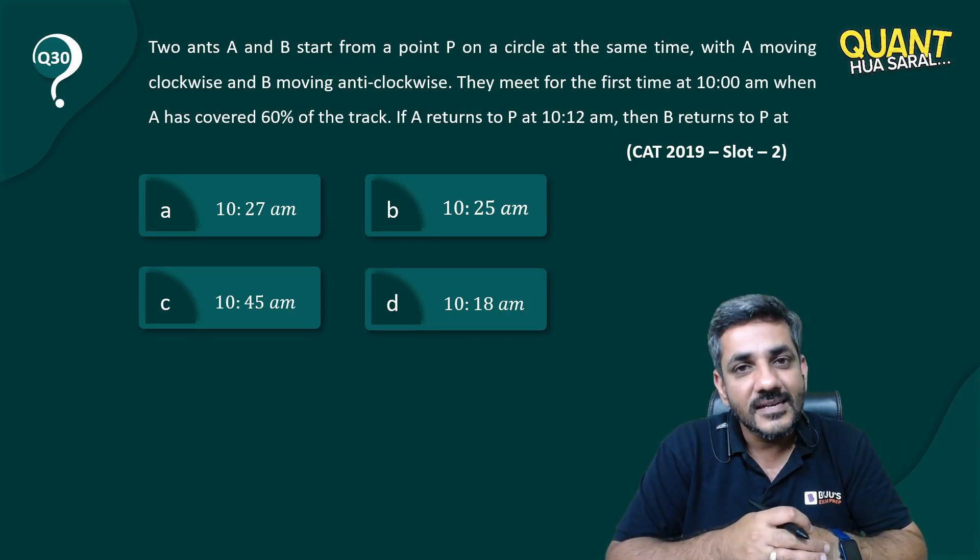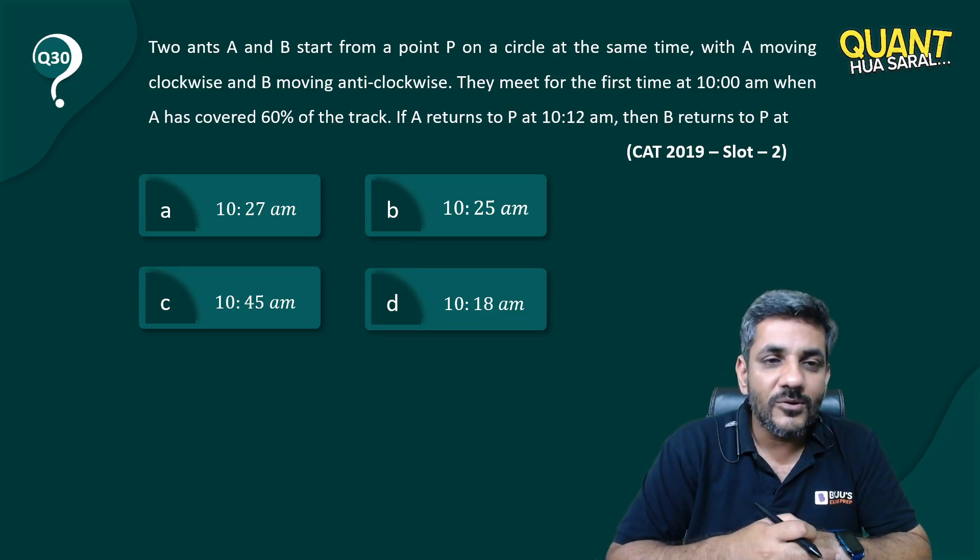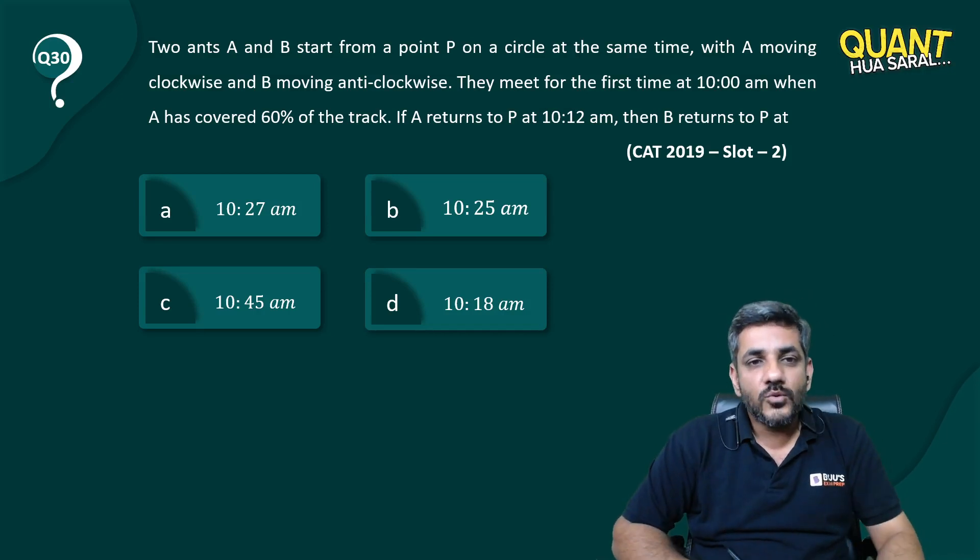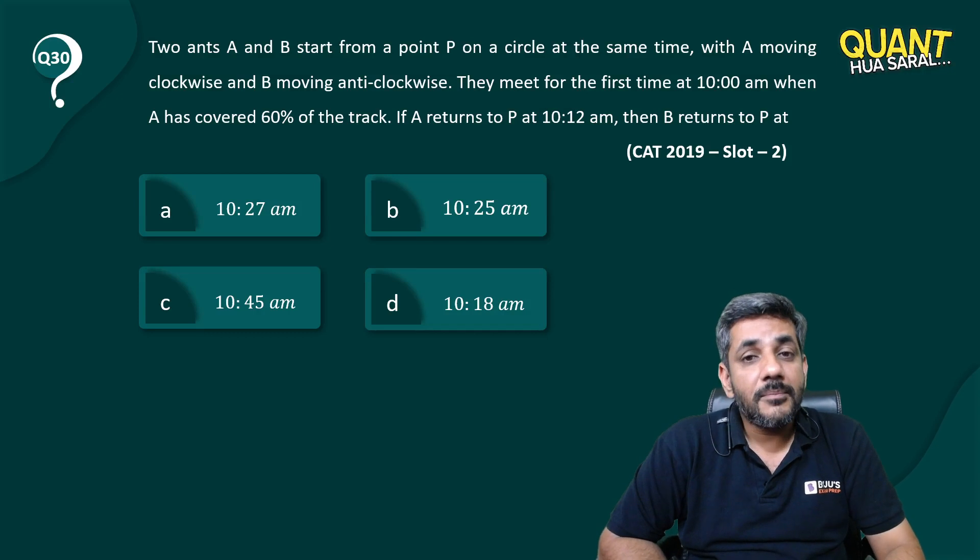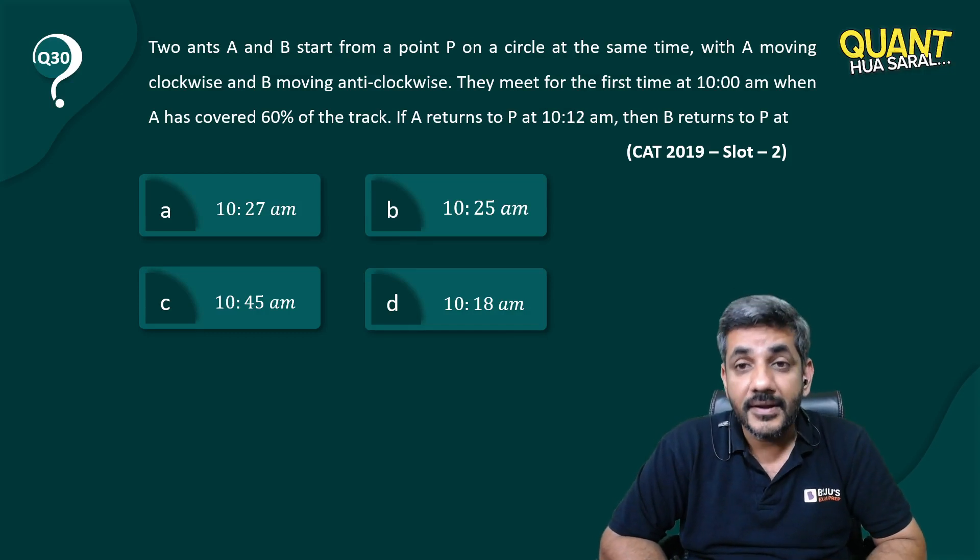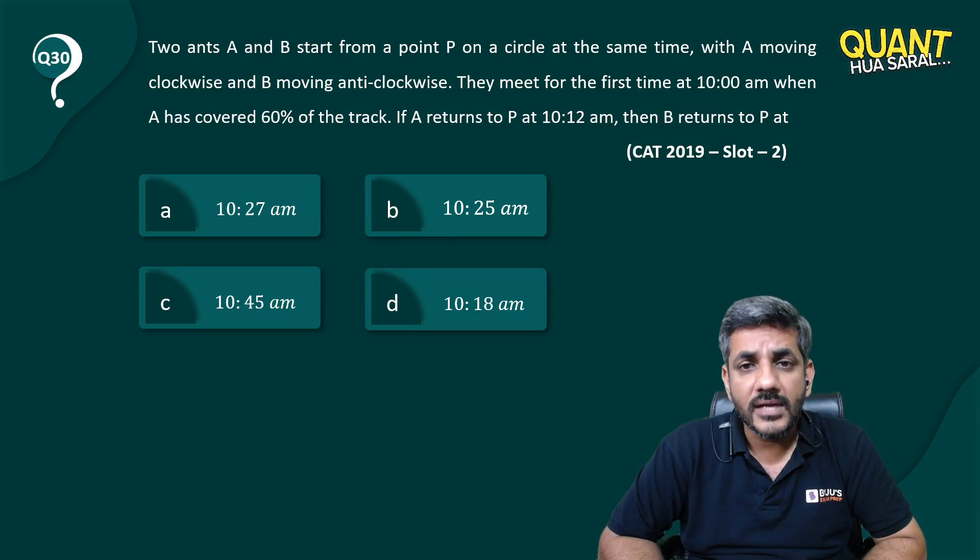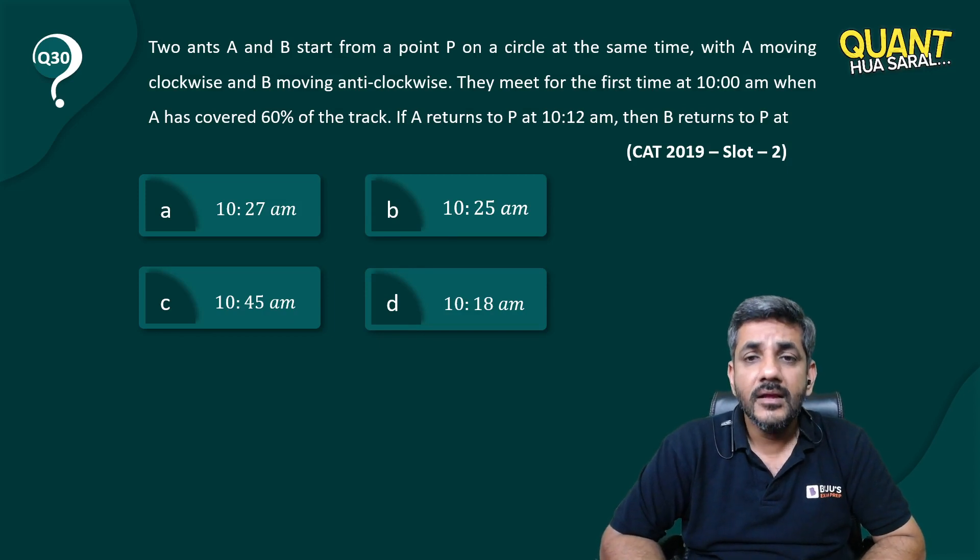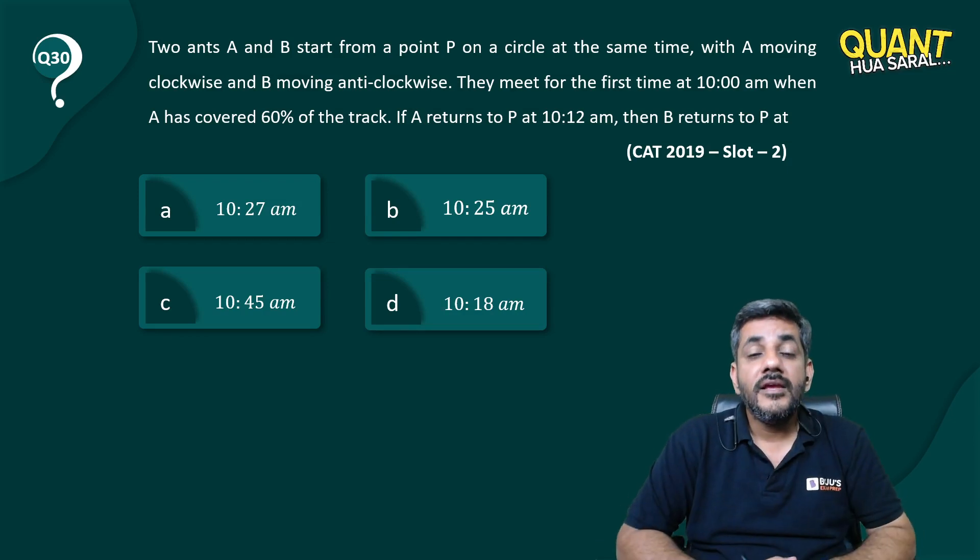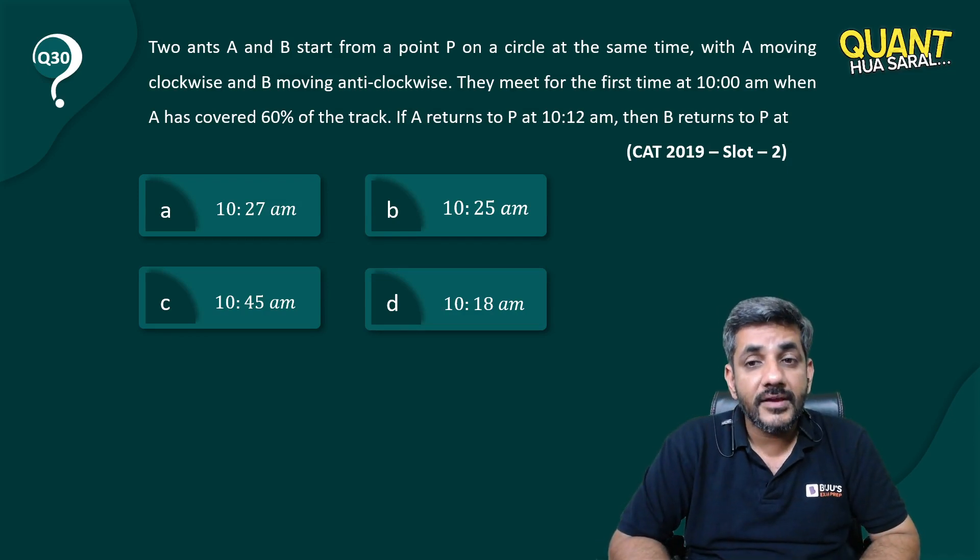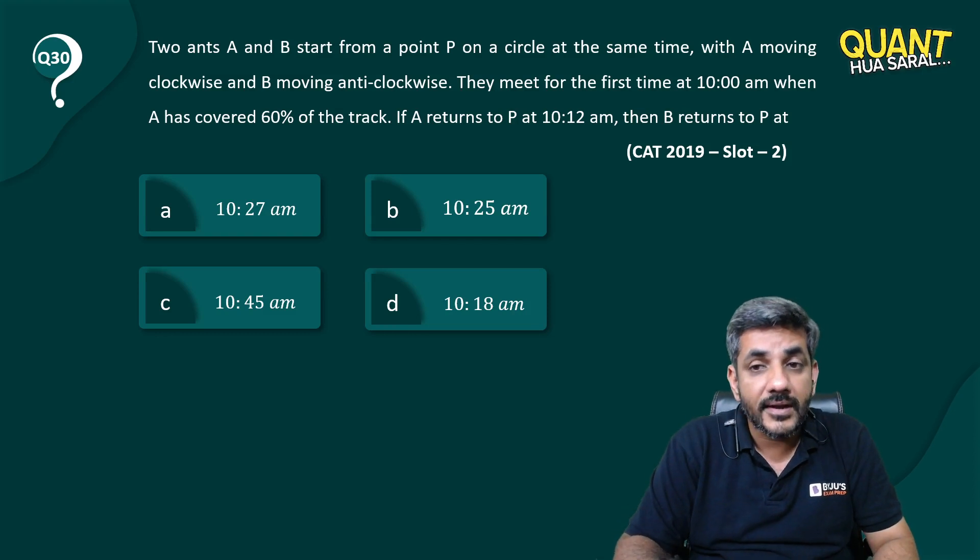Let's have a look at this question number 13. Two ants A and B start from a point P on a circle at the same time, with A moving clockwise and B moving anti-clockwise. They meet for the first time at 10 am when A has covered 60% of the track. If A returns to P at 10:12 am, then B returns to P at what time?